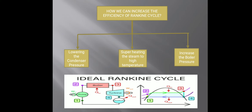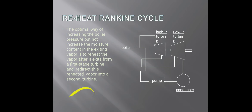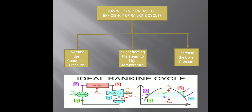First of all, efficiency is output upon input. In the case of the Rankine cycle, the output is turbine work minus pump work, and the input is the heat supplied in the boiler. So we can either increase the output or decrease the heat supply in the boiler to increase the efficiency.